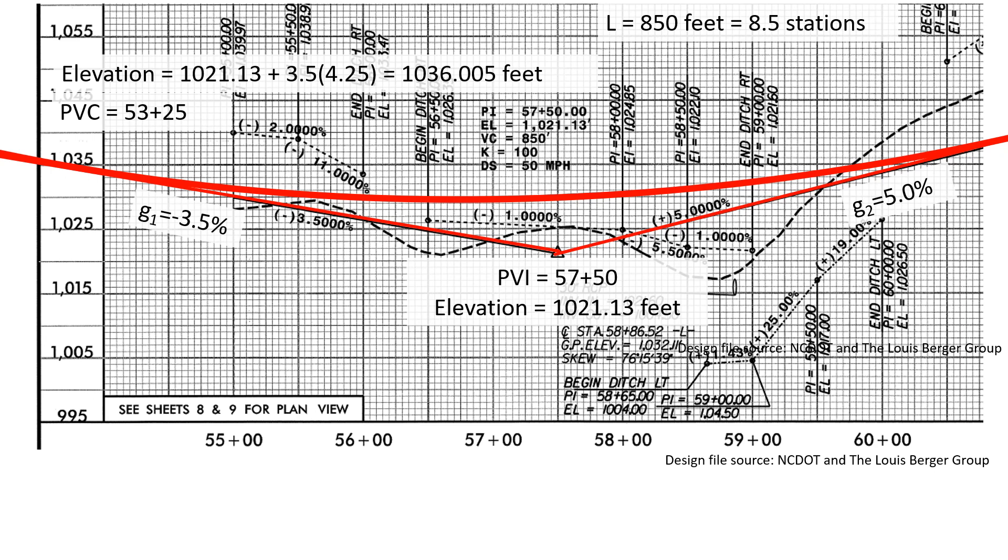We can also determine the elevation at this point. And we're going to need this for the parabolic equation so I'm working a little bit ahead here. So we start with that PVI elevation and add 3.5 for the grade multiplied by the distance, 4.25 stations gives us an elevation of the PVC of 1036.005 feet.